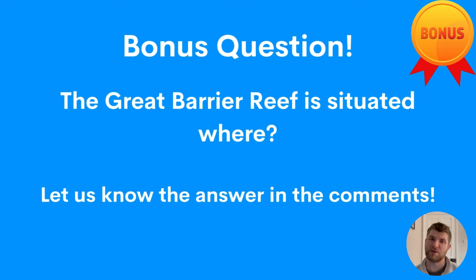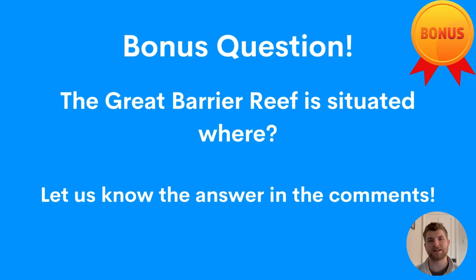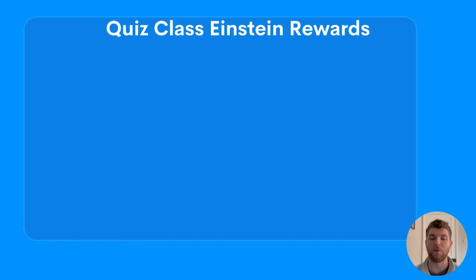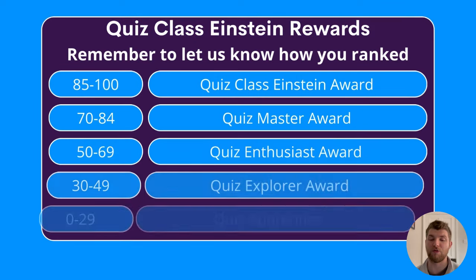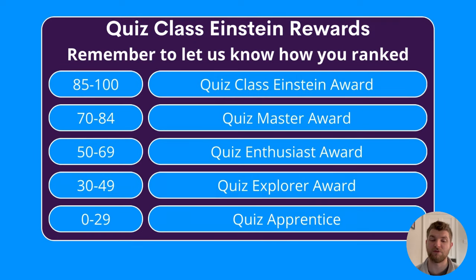And here's a bonus question to finish things off: the Great Barrier Reef is situated where? Let us know the answer to that one in the comments, and whilst you're there, let us know where you ranked based on our Einstein rewards — between 0 and 100 — and which award you receive based on your score.